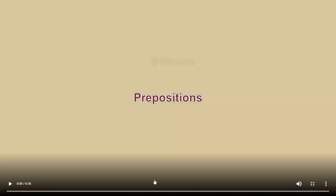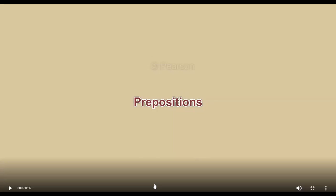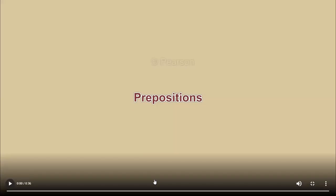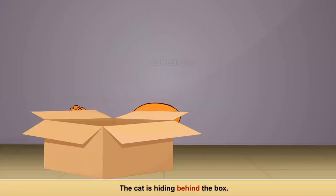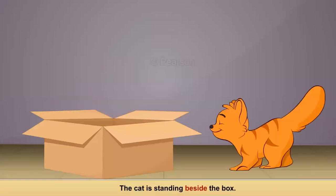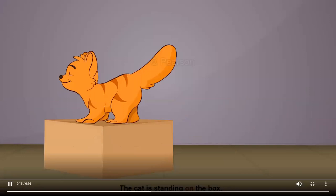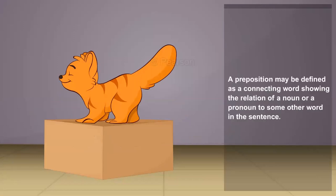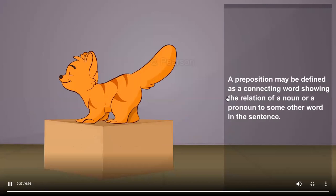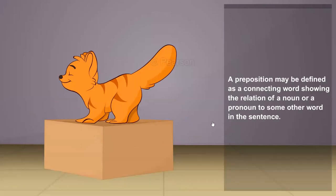So let's have a look at the video. Pre-positions. The cat jumped into the box. The cat is hiding behind the box. The cat is standing beside the box. The cat is standing on the box. Into, behind, beside, and on are prepositions. A preposition may be defined as a connecting word showing the relation of a noun or a pronoun to some other word in the sentence.